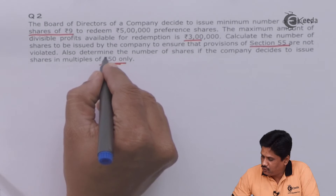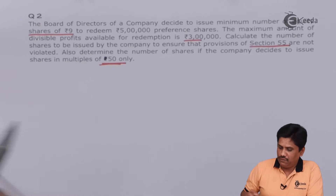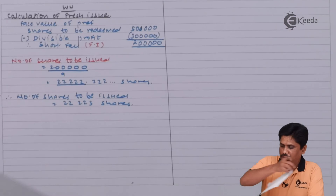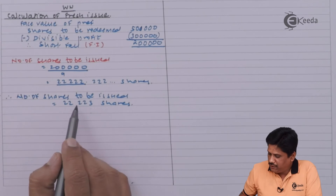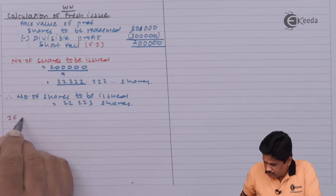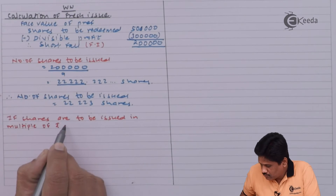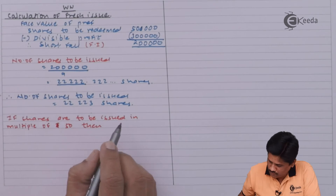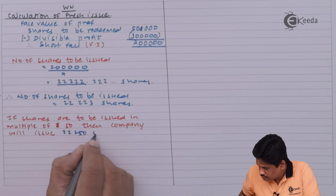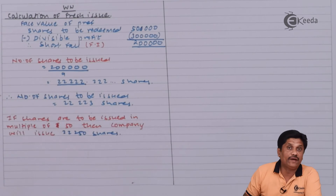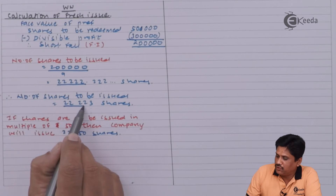Now, in the case of multiples of 50 only: when you have to issue shares in multiples of 50, we need to issue 22,223 shares. The next multiple of 50 above 22,223 would be 22,250. So if the question requires multiples of 50, the answer is 22,250 shares.